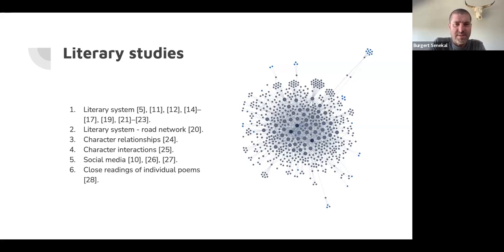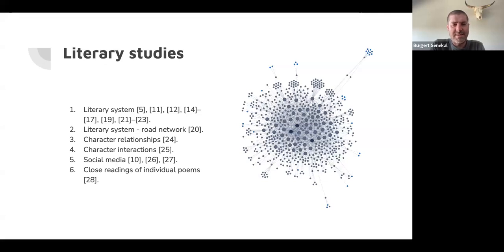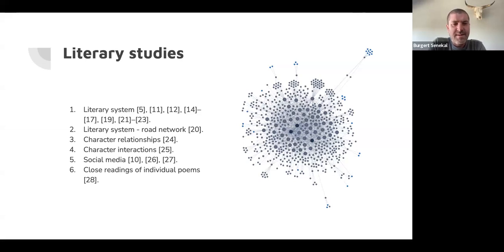The fifth application is social media — less about the text and more about what's written about the text. In one study I looked at the conversation around Deon Meyer's Twitter profile. In two others I looked at hashtag co-occurrence networks on Instagram, where a hashtag is a node and if two hashtags co-occur in the same post there's a link between them. By running the modularity algorithm you can see which hashtags cluster together. I did one on canonized Afrikaans authors and another on the discourse around Ingrid Jonker.